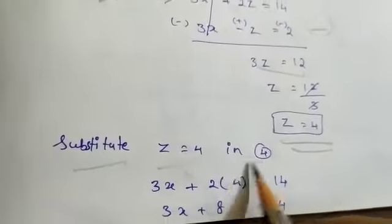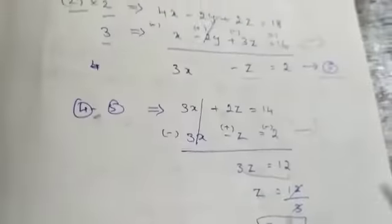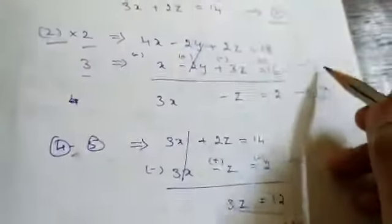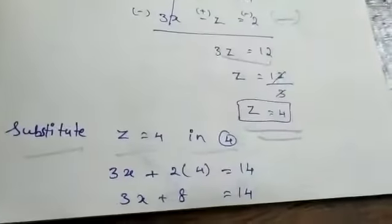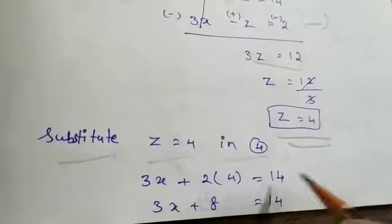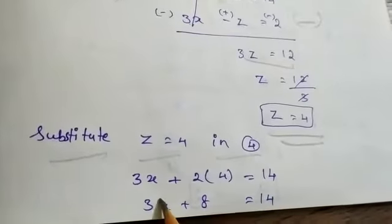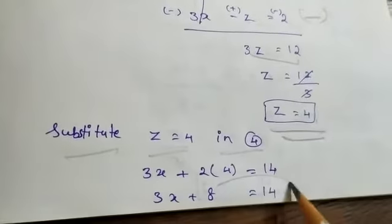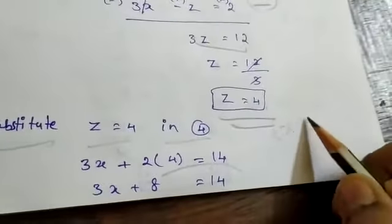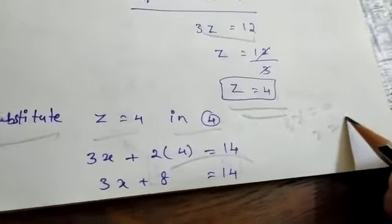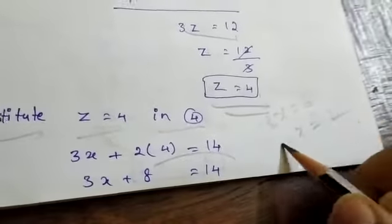Substitute z equal to 4 in equation number 4. You will get 3x plus 2 into 4 equal to 14, and 3x plus 8 equal to 14. Bringing 8 to the other side, 3x equal to 6 and x equal to 2.